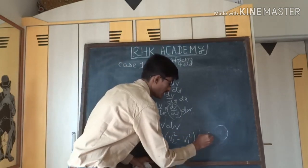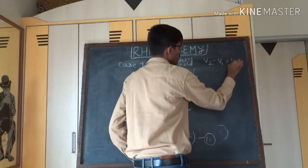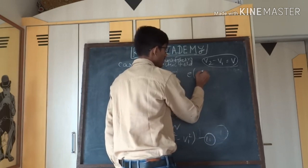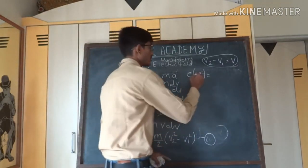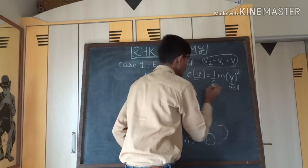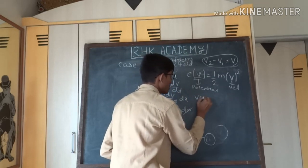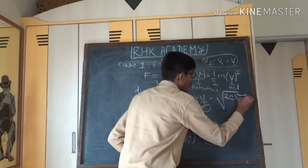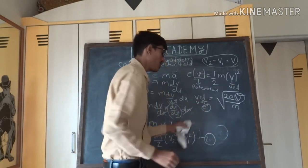Considering both equations and letting V = V₂ − V₁ (the potential difference between the capacitor plates), we get eV = ½mv². Here V is the potential difference and v is the velocity of the electron. From this we get the velocity of the electron: v = √(2eV/m), where V is the potential difference between the capacitor plates.